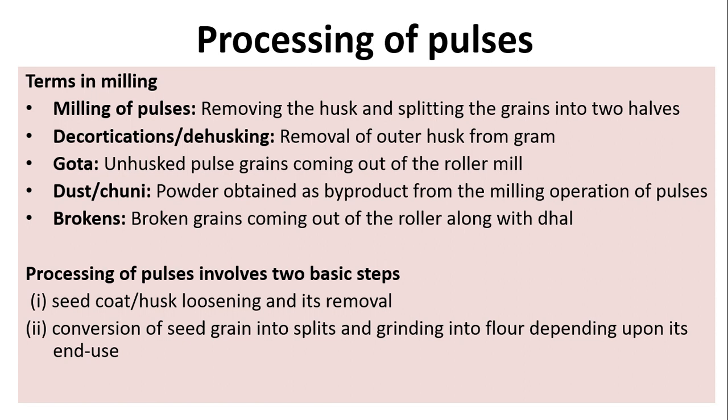Gotta refers to unhusked pulse grains coming out of the roller mill. Dust or chuni is the powder obtained as a byproduct from the milling operation of pulses. Brokens are the broken grains coming out of the roller along with the dal.